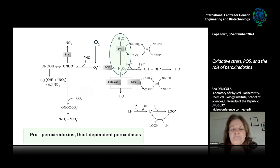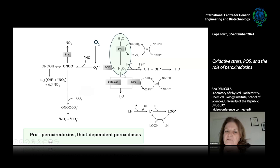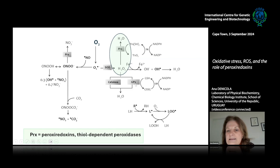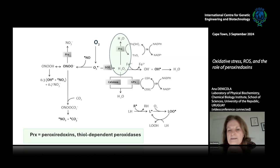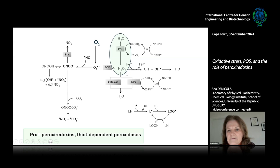We focus our studies on an enzyme that reduces hydrogen peroxide — it's a peroxidase, but a particular one: a thiol-dependent peroxidase. It doesn't have a heme like catalase, which also reduces hydrogen peroxide. It doesn't have a seleno amino acid — selenocysteine — like glutathione peroxidase. Instead it has a common cysteine residue that is the catalytic residue responsible for the reduction of the peroxide substrate.